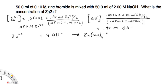So the zinc's initial concentration is 0.050, for the hydroxide it's 0.95, and then my complex ion initially is 0. We're just setting this up to make the math easier — that's before the reaction.